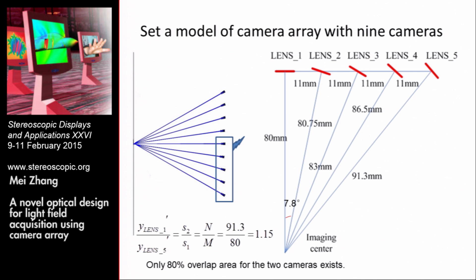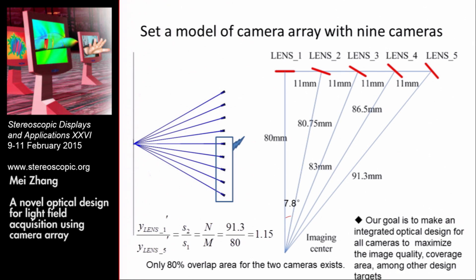Here we set a model for a camera array with nine cameras. The distance from the center camera to the image center is set as 80 millimeters, and the spacing distance is set as 11 millimeters. Therefore, the distance from the side camera to the image center would be 91.3 millimeters. From the calculation, the ratio of the image size for the center camera and the side camera would be 1.1, meaning only 80% overlap area exists between the two cameras.